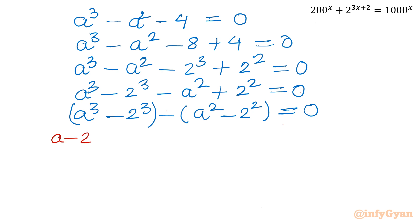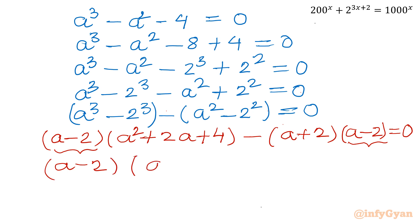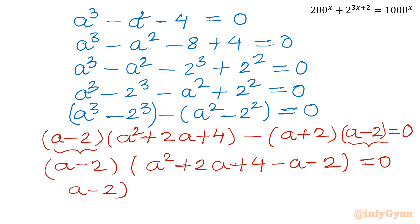Applying the difference of cubes: (a minus 2) times (a square plus 2a plus 4). Then minus, applying the difference of squares: (a plus 2)(a minus 2), all equal to 0. Now a minus 2 is common, so taking it overall: (a minus 2) times (a square plus 2a plus 4 minus a minus 2) equal to 0. Further simplifying: (a minus 2) times (a square plus a plus 2) equal to 0.